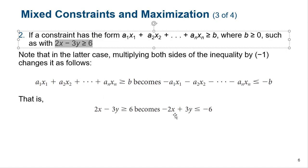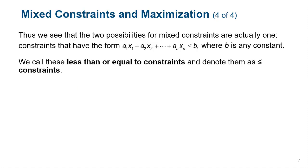we multiply both sides by negative one, and it becomes negative 2x plus 3y less than or equal to negative 6. Now we at least have a less than, but it's less than or equal to negative 6. This shows that mixed constraints — whether less than or equal to or greater than or equal to — all converge to expressions less than or equal to a constant, not necessarily positive. So we basically just rewrite them all in terms of less than or equal tos.